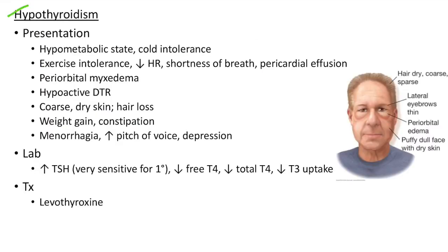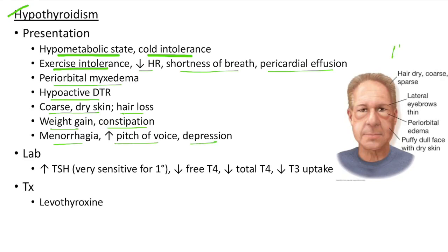Now let us see about hypothyroidism. Clinical features include hypometabolic state and cold intolerance, exercise intolerance, low heart rate, shortness of breath and pericardial effusion. There will be periorbital myxedema, hyperactive deep tendon reflexes, coarse dry skin, hair loss, weight gain, constipation, hoarseness, increased pitch of voice and depression. This picture shows the clinical features of hypothyroidism: dry coarse sparse hair, thin lateral eyebrows, periorbital edema and puffy dull face with dry skin.